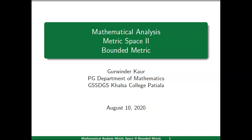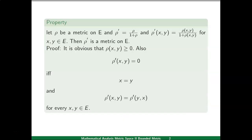This lecture is a continuation of metric space part 2, and here we will see what is a bounded metric. Let us start with a very interesting property of metric. If rho is a metric defined on set E, rho dash is defined as rho divided by 1 plus rho, that means rho dash of xy equals rho xy upon 1 plus rho xy for xy belonging to E. Then we will prove that rho dash is also a metric on E.